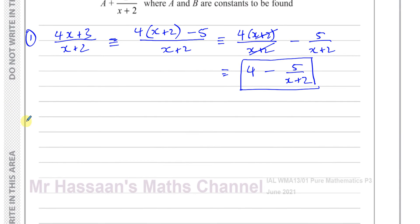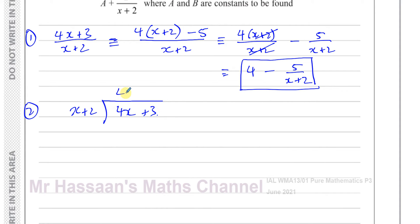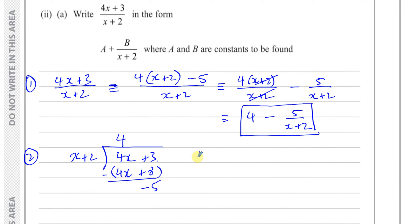A second method is algebraic long division: put (x+2) on the outside and (4x+3) inside. x goes into 4x four times; 4 times (x+2) gives 4x+8. Subtracting: 4x minus 4x is 0, and 3 minus 8 is minus 5. Nothing left to bring down, so (x+2) goes into (4x+3) four times with remainder negative 5 — giving 4 minus 5/(x+2), the same answer.